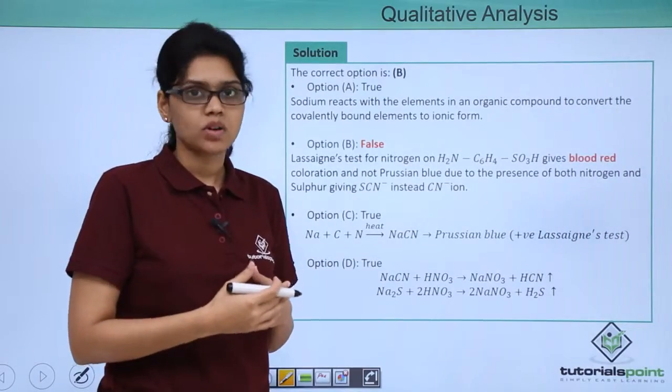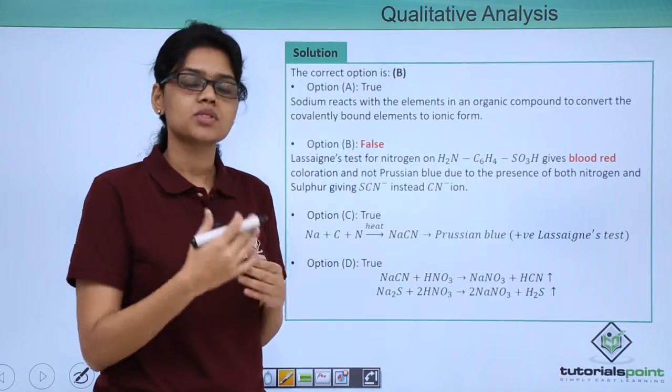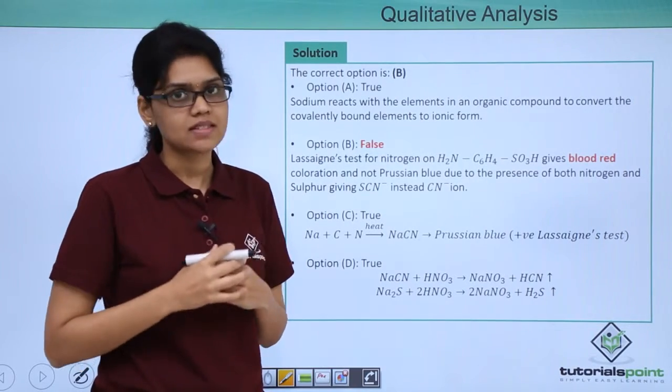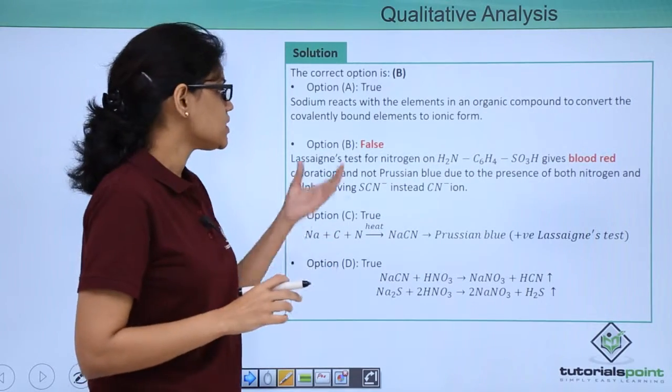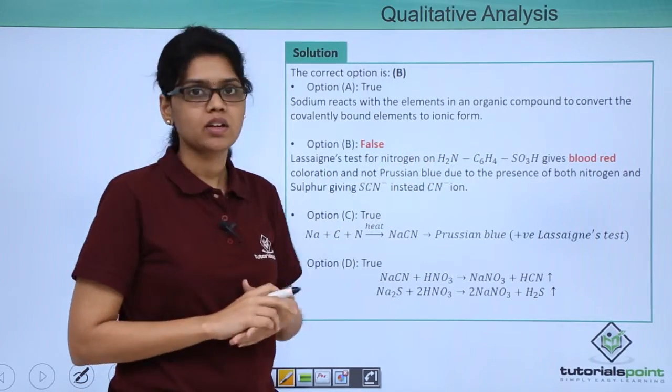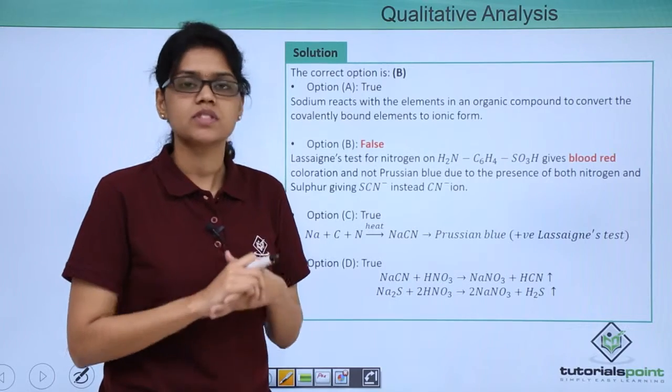It is once they are formed in water soluble salts that we usually use the confirmatory test for various elements. So option A is correct. Now option B states that test for nitrogen on this particular complex gives Prussian blue colour, which is false.